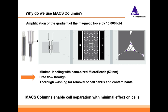The column is what really sets MACS apart from other technologies. The column amplifies the magnetic gradient by 10,000-fold. Here on the left you can see a few columns, and on the right you can see how the spheres inside the column amplify the gradient of the magnetic force. This ensures a thorough magnetic gradient throughout the column, enabling minimal labeling with the nano-sized microbeads. It provides free flow-through of the cells through the column and thorough washing for removal of cell debris and contaminants. In conclusion, the MACS columns enable cell separation with minimal effects on the cells.